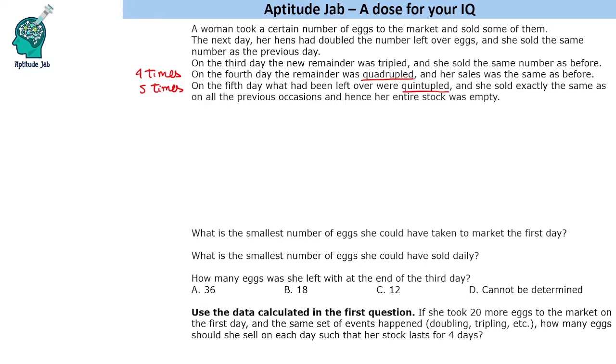Now in this question, sometimes we are given the number sold on each day or the number she started with. If the number sold every day is given, we go in the reverse way. If the number she started with is given, we could start from the beginning. But we are not given any of these things.